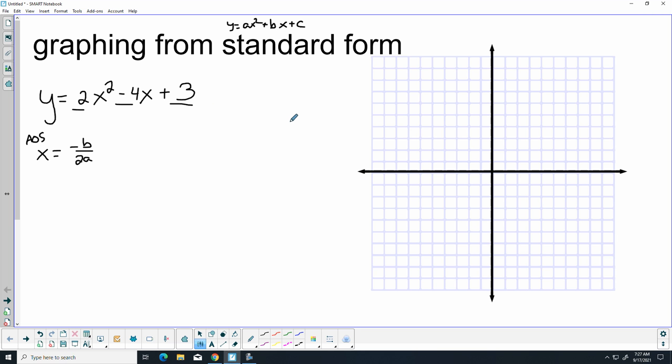I say negative 3... negative 4. C is 3. So negative b is going to be negative negative 4, which is positive 4, over 2 times your a. Well, that just comes up to be 1.